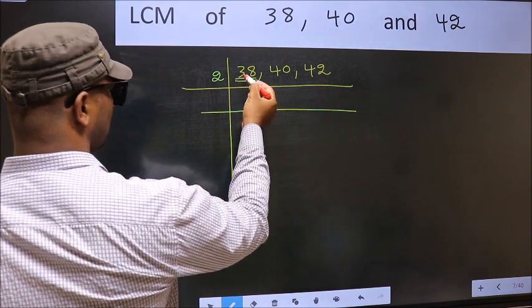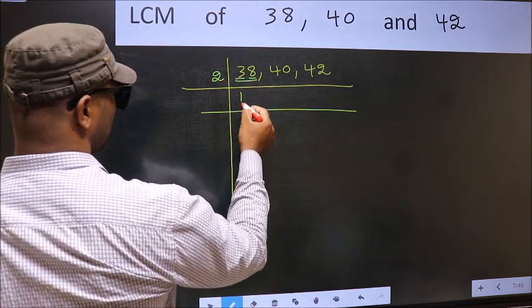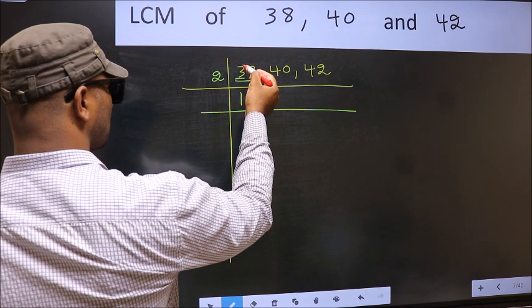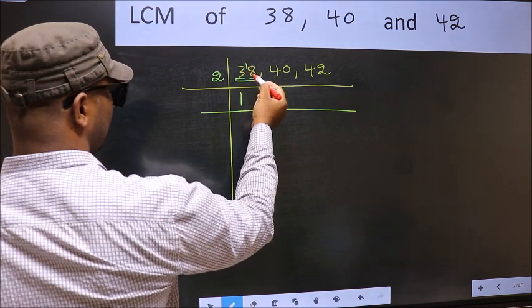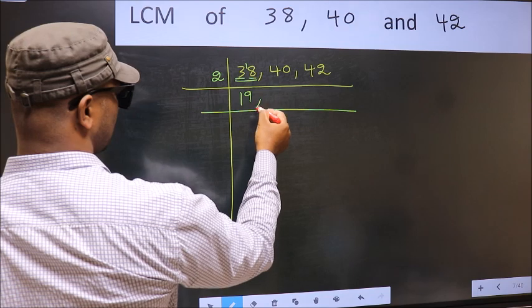First number 3, a number close to 3 in 2 table is 2, so 1, 2. 3 minus 2 is 1, 1 carried forward, 18. When do we get 18 in 2 table? 2 times 9 is 18.